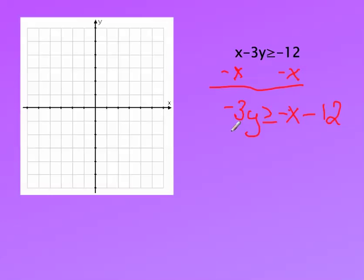Okay, and here we have to divide by negative 3, everything in the entire problem. But remember, with inequalities, when you divide by a negative, you have to remember to flip your inequality. So instead of being greater than or equal to, this one actually becomes less than or equal to.